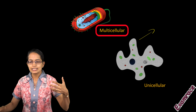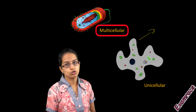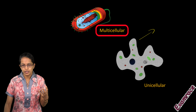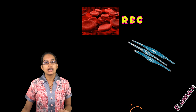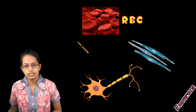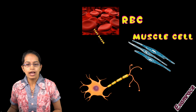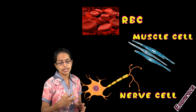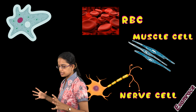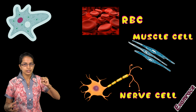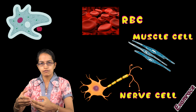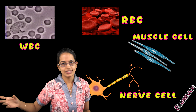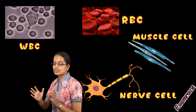In multicellular organisms, you have specialized cells — specialized cells for blood, for muscles, and for nerves. Their arrangement is very important to understand. RBCs are spherical in shape, muscle cells are spindle-shaped, and nerve cells are elongated cells. Amoeba does not have any fixed shape, whereas RBC also changes shape similar to an amoeba, but amoeba is a full-fledged organism while RBC is not. That is an important difference to understand.